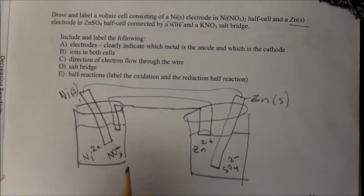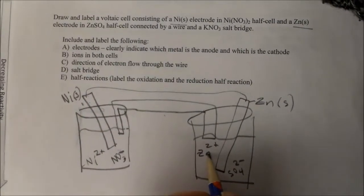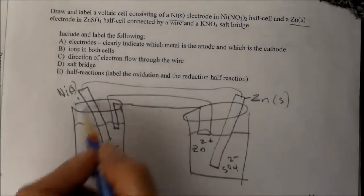Now we need to figure out which way the electrons will flow. Are they going to go from the solid nickel to the zinc ions or from the solid zinc to the nickel ions?